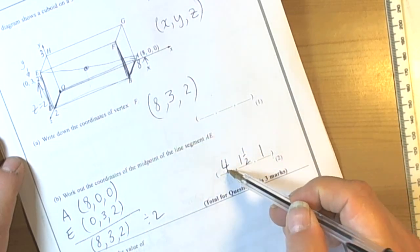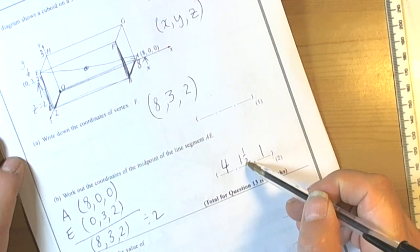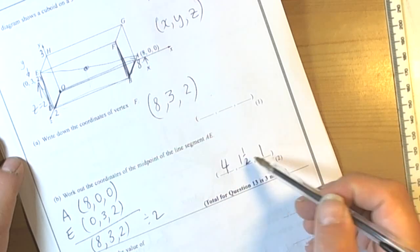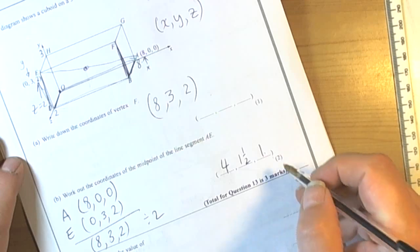So we ended up at half of 8 is 4, half of 2, sorry half of 3 is 1 and a half, and half of 2 is 1. So that will be correct.